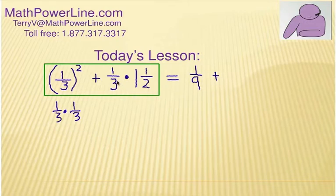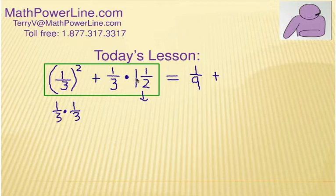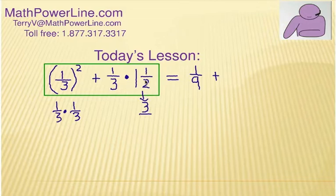Now we have a fraction times a mixed number fraction. What we have to do is convert one and a half into a numerator and denominator — in other words, an improper fraction. So we'll do a little multiply-add trick, which is a shortcut. We're going to take one times two is two, plus one. So multiply, add — that's the rule. One times two is two, plus one is three. That's our numerator. Keep the same denominator — three over two.